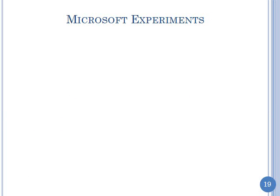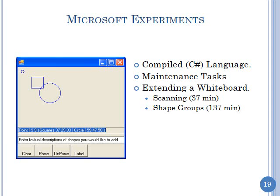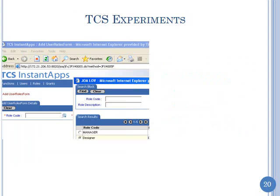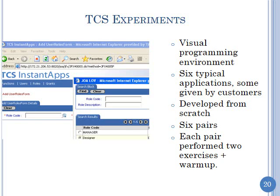The software development environment differed between organizations. At Microsoft we used a compiled language; tasks were maintenance tasks where pairs were given a whiteboard problem to change, with two exercises per pair. At TCS the programming environment was visual — you filled forms to build applications. We took six typical applications, some given by actual TCS customers, developed from scratch. Six pairs each performed two exercises plus a warm-up exercise to get to know their partner.